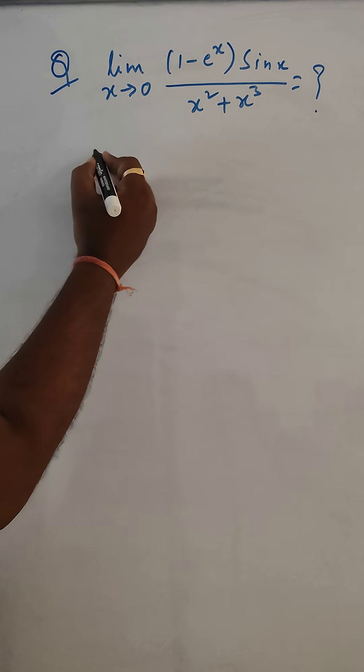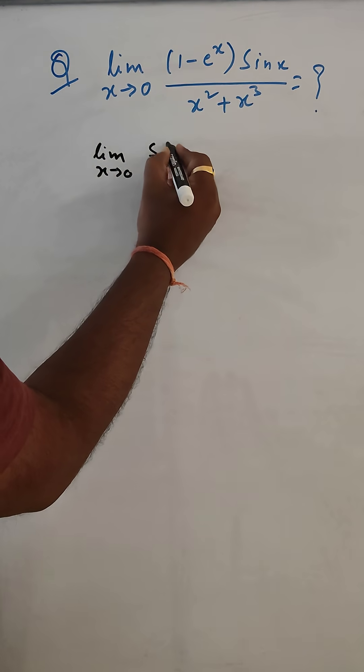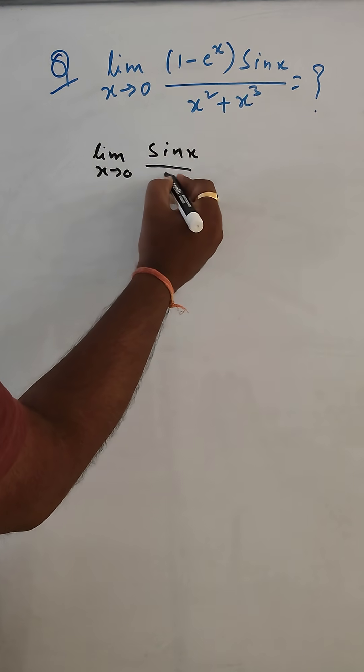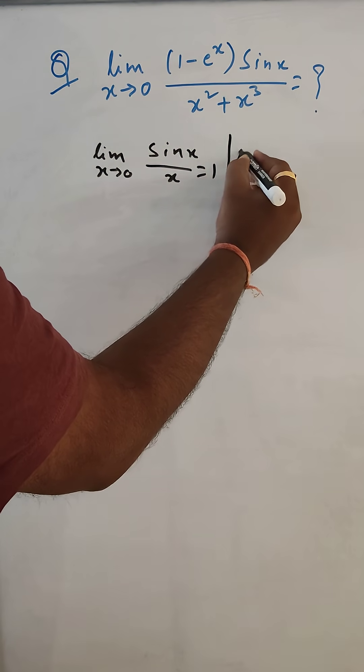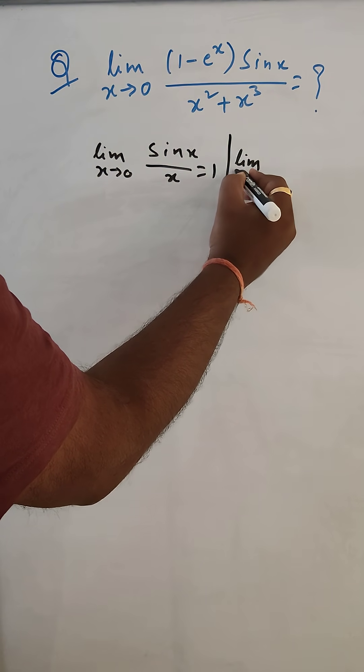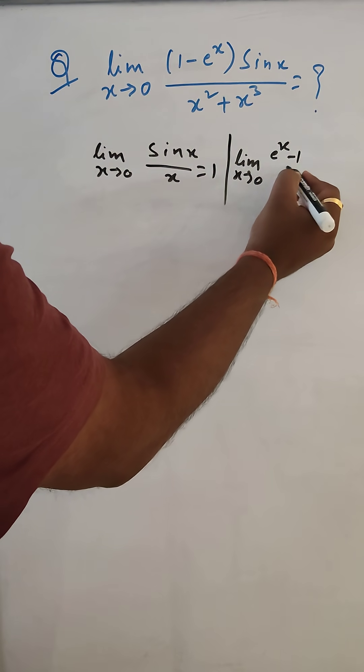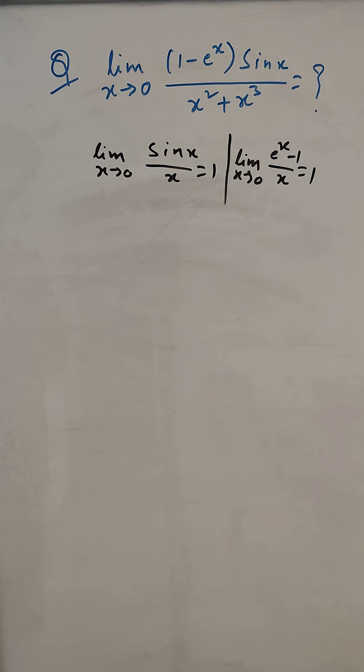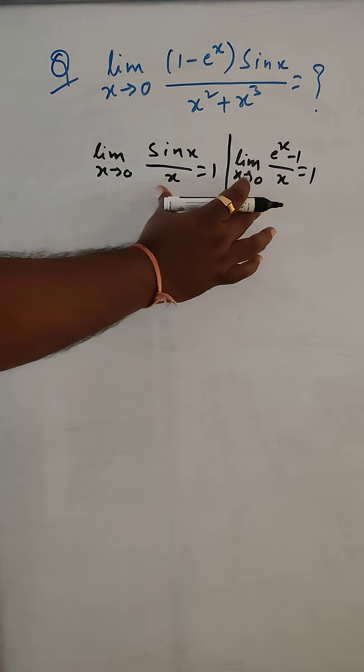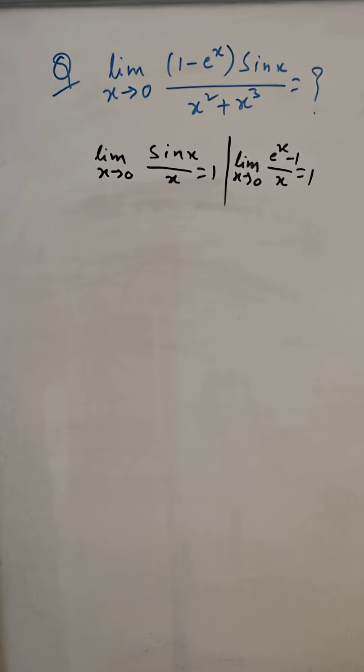So we know the formula: limit x tends to 0, sin x by x equals 1. And another limit formula: limit x tends to 0, e to the power x minus 1 by x equals 1. We have to use these two formulas to get the answer.